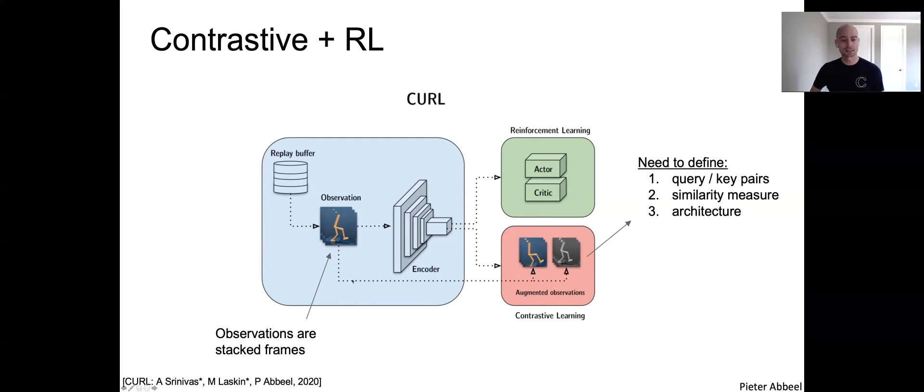That would be reinforcement learning on its own. What we now add in CURL is an extra path at the bottom here where we generate augmented observations. Just like in SimCLR, we take observations, we take different augmentations, and then we're going to have a contrastive loss on these augmented observations to hopefully, just like in SimCLR, learn a good representation of the visual observations that will allow us to learn more quickly than if we did not have this additional contrastive loss. There's a couple of questions we need to answer. Exactly how do we generate these query key pairs? What is going to be our similarity measure? And what's our architecture? One thing to quickly note here is that as we take things from our replay buffer, we always feed four frames here in one go.